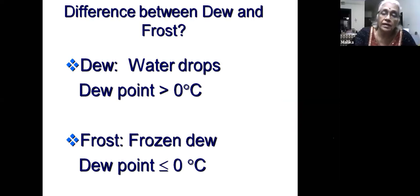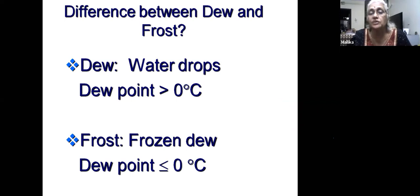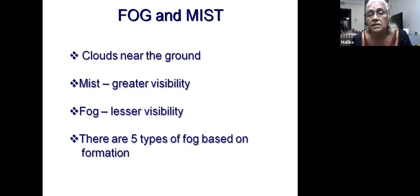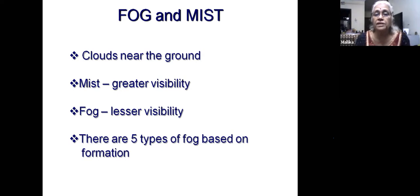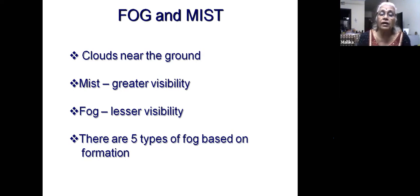Dew is water droplets forming when the dew point is greater than zero degrees Celsius. When the dew point is equal to or less than zero degrees, water drops freeze and become frost - so frost is essentially frozen dew. Fog is condensation happening close to the ground - when you have fog, visibility is almost zero. Mist is lighter, with visibility of about one kilometer, and 'haze' is even lighter than mist.